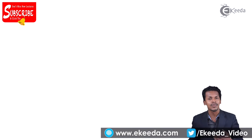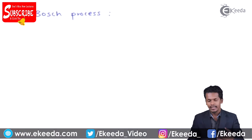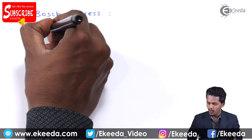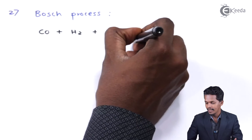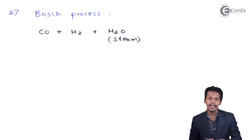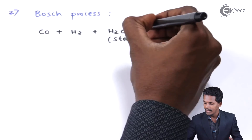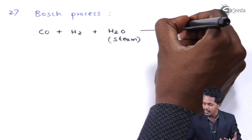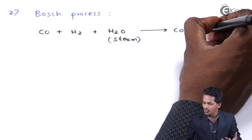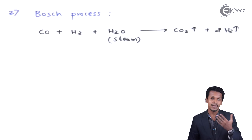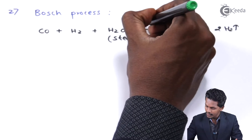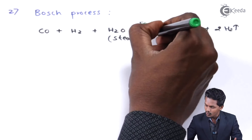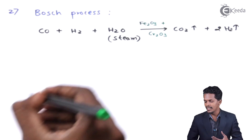The next method to prepare hydrogen in large quantities is the Bosch process. In this process, water gas — which is CO + H₂ — is treated with high-temperature steam (H₂O). The products obtained are CO₂ along with two moles of hydrogen. This reaction requires a catalyst: Fe₂O₃ is used as the catalyst and Cr₂O₃ acts as the promoter, at a high temperature.